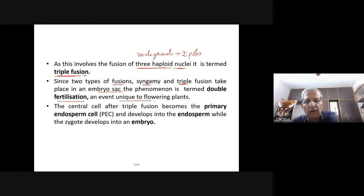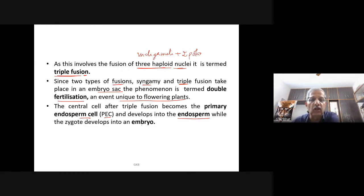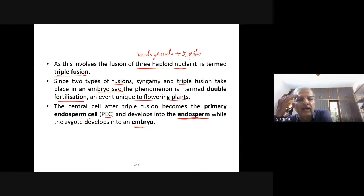The central cell after triple fusion becomes the primary endosperm cell (PEC) and develops into the endosperm, while the zygote develops into the embryo. The endosperm contains reserve food material used for the nutrition of the developing embryo.